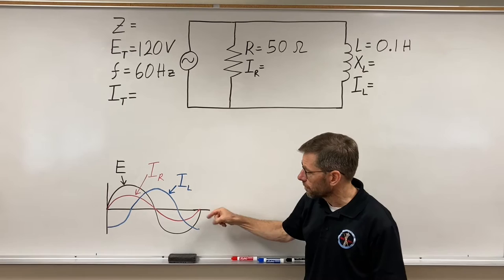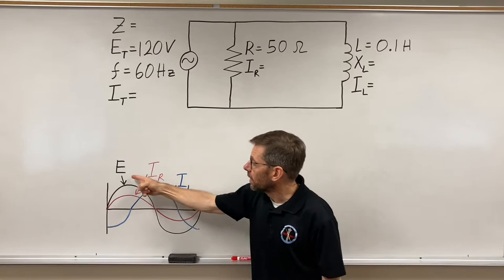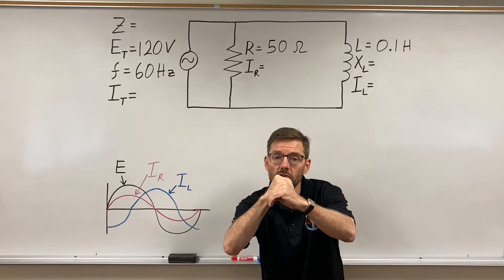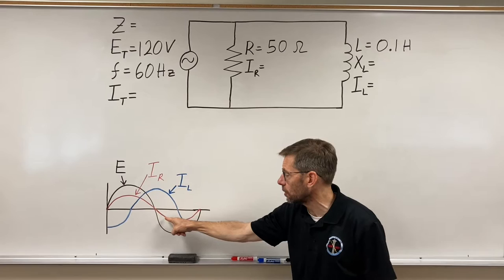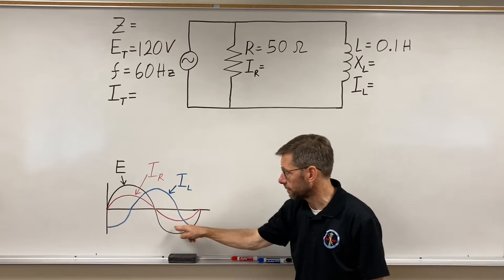Voltage is going to be my reference. That's the same and in phase on each branch. So which current is in phase with the voltage? Well, that's going to be my resistive. In resistors, the voltage and current are always in phase. And therefore it crosses zero at the same time, peaks at the same time, crosses zero at the same time, goes negative, right? The resistive current and the voltage track each other.